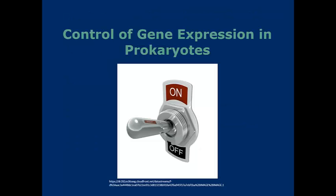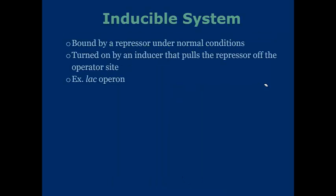How do we control gene expression in prokaryotes? There are two types that we'll go into. The first type of system is the inducible system. This is normally bound by a repressor under normal conditions, and it's turned on by an inducer, which will pull the repressor off the operator site. An example of this is the lac operon. Bacteria generally prefer not to synthesize lactase because it's more difficult, and they'll prefer to use glucose. However, when lactose is present in large quantity, it's going to bind to these repressors and pull it off, therefore allowing for the synthesis of the lactase enzyme.